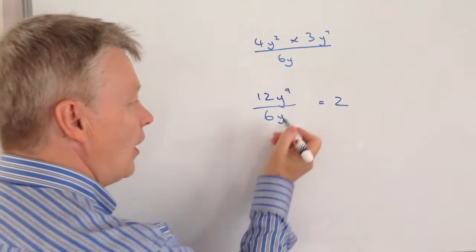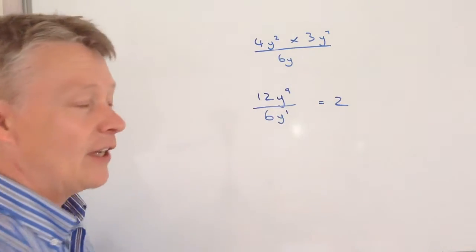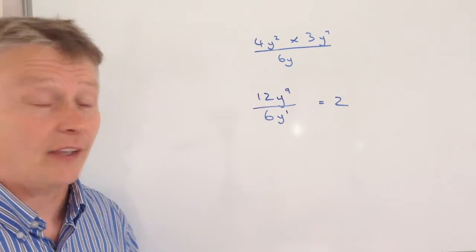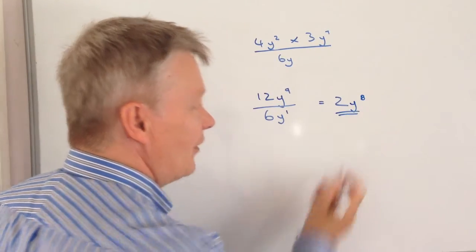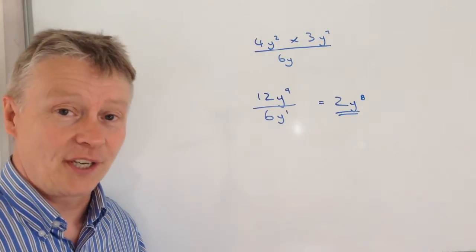Well, that's the same as saying y to the 1. And when you divide indices, you actually subtract them. So that's going to be y to the 8. And that would be the answer to that particular question.